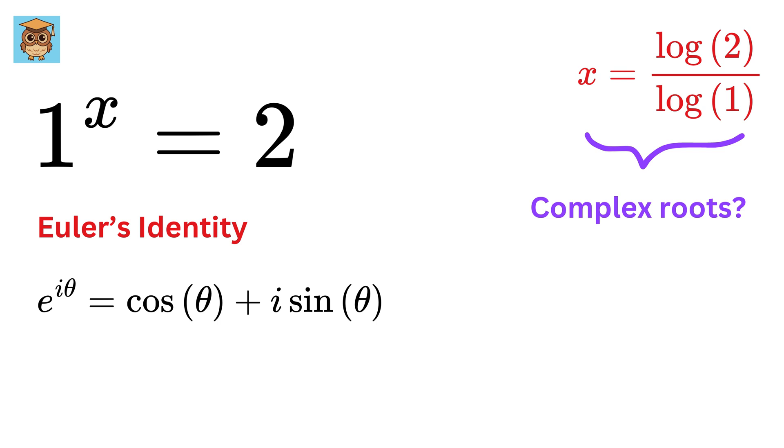If you are dealing with the complex world, then everyone should know this identity. Now, if you put the value of theta as 0, we get cosine 0 plus i sine 0. Cosine 0 is 1 and sine 0 is 0. So e raised to i times 0 becomes 1.